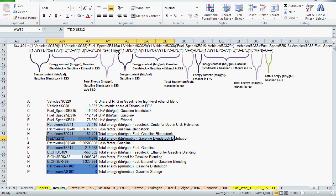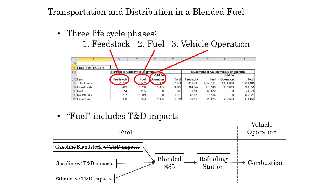I'll explain why this is. In the division of life cycle processes in GREET, there's feedstock, fuel, and vehicle operation. The fuel process includes transportation and distribution of a fuel up to the point where it will be combusted or expended in the vehicle operation process. Because gasoline blendstock is being blended into another fuel instead of going to a fueling station in this instance, the distribution reference must be subtracted to take out a fuel life cycle term that doesn't reflect the real-life pathway. It's the final blended E85 fuel that will go to a fueling station, so T&D impacts will be included at the end of the E85 formula.